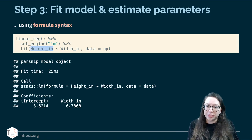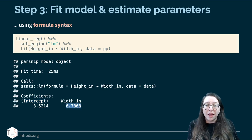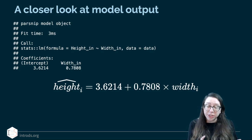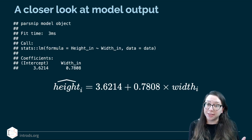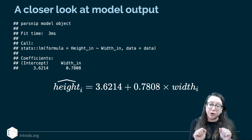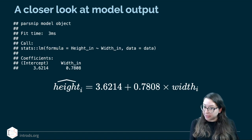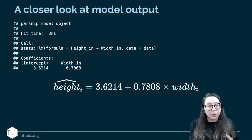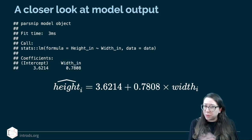As a result, we get the model output — we can see coefficients: our intercept and our slope for width. If I use these values to recreate the formula, the predicted height equals 3.6214 as the intercept plus 0.7808 as the slope times the width of the painting. So we now have an estimate for the intercept and the slope of this model. It's a positive slope, which is what we expected.